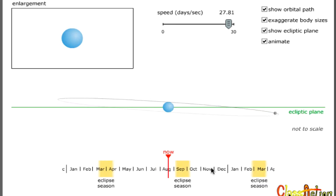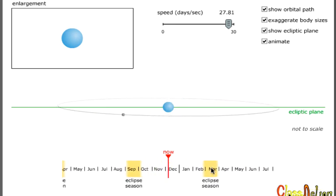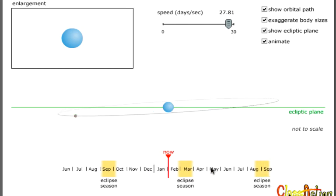They can be either partial, Earth's shadow covering only part of the Moon, or total when Earth's shadow covers the full surface of the Moon.